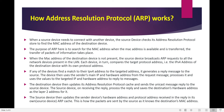When a source device needs to connect with another device, it will check its Address Resolution Protocol store to find the MAC address of the destination device. There will be a certain table known as the ARP table, where the mapping of MAC addresses to IP addresses is stored. The purpose of ARP here is to search for the MAC address. When the MAC address is available and is found, the transfer of packet information will take place.